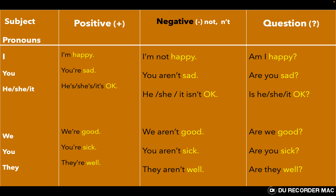Subject pronouns continued: we, you, they. Now we are going to add another word to make a sentence with verb 'to be': I am happy, you're sad, he's okay, she's okay, it's okay, we're good, you're sick, they're well. This is verb to be plus an adjective: sad, happy, okay, good, sick, well — this is the positive form.